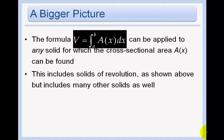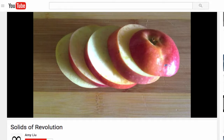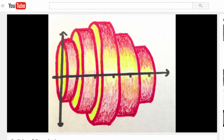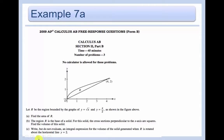The bigger picture: the formula V = ∫ₐᵇ A(x) dx can be applied to any solid for which the cross-sectional area A(x) can be found. This includes solids of revolution, as we've seen, but also many other solids. Here is an illustration of our cross-sections idea — we slice an apple into little pieces, find the radius of each individual slice, and add them all up. The more slices we create, the better the approximation. Here is an actual AP problem we're going to practice, mainly for Part B, the cross-sections type problem.